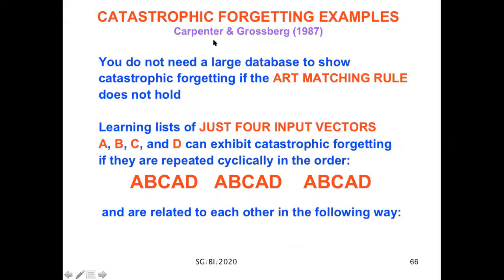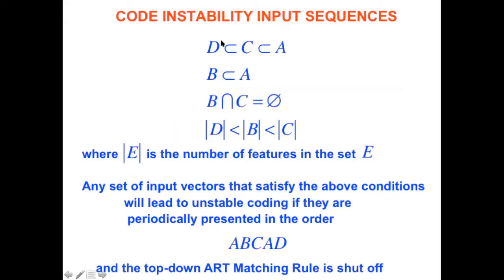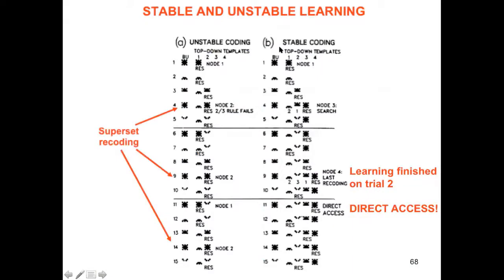Moreover, Gail Carpenter and I showed in the 80s already how easy it is to get catastrophic forgetting. You don't need a large database to show catastrophic forgetting if the ART matching rule doesn't hold. In fact, we showed in any of infinitely many lists of just four input vectors—A, B, C, D—can exhibit catastrophic forgetting if they repeated cyclically in the order A, B, C, A, D, A, B, C, A, D, and so on, if these input vectors are related by some general subset requirement: D is a subset of C, a subset of A, and so on. Here are a couple of coding examples.